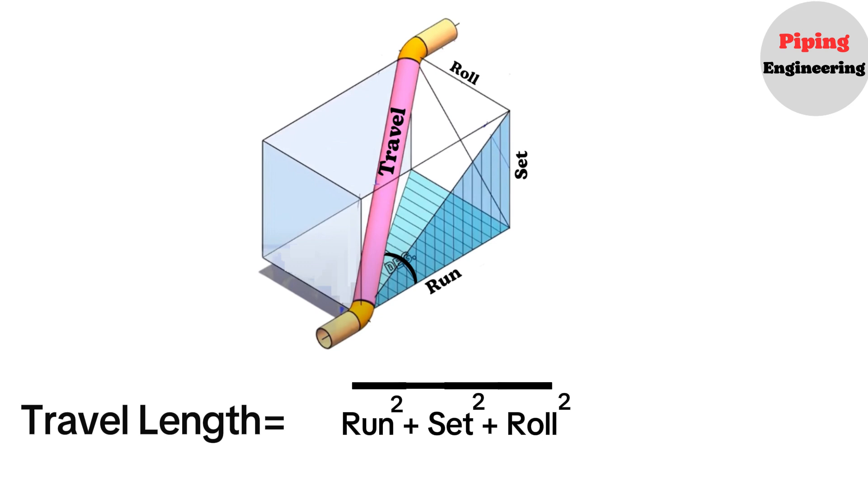This formula comes from the Pythagorean theorem in three dimensions, where the run, set, and roll represent the pipeline's movement along the eastward, upward, and northward directions, respectively.